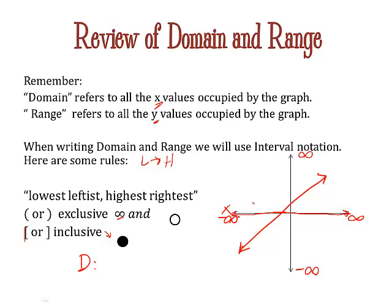So this one would cover forever this way, which means it goes from negative infinity to positive infinity. Because it's infinity, remember this is exclusive or parentheses, so that would be the domain of this graph.